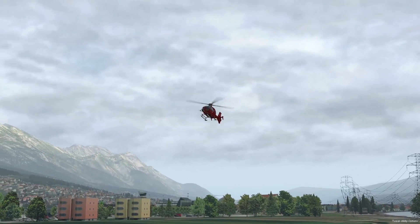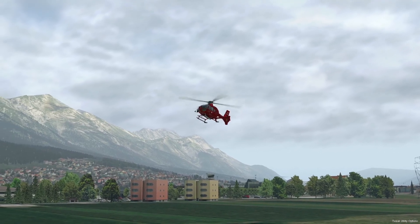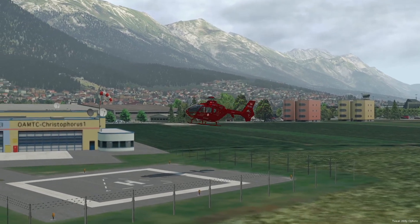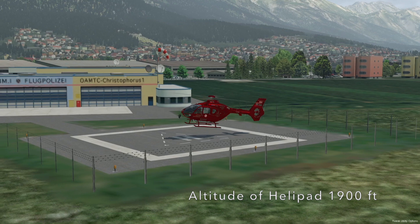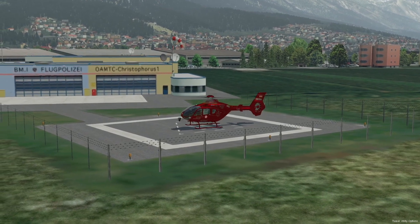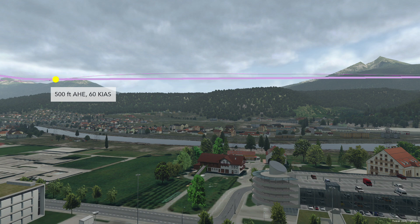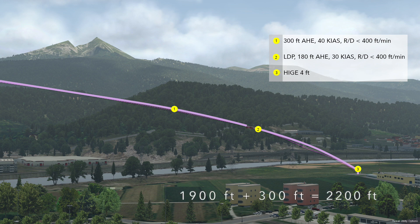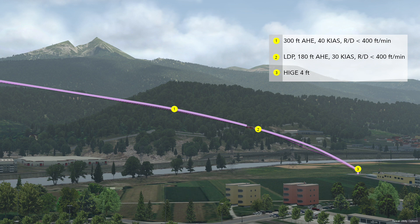Preparation is also important for a landing. We want to approach against the wind as much as possible, so we need to know the wind direction. We also need the altitude of the helipad — here it is 1900 feet again. With this we calculate important points: 500 feet above the helipad is 2400 feet, 300 feet above the helipad is 2200 feet, and the landing decision point at 180 feet above the helipad is 2080 feet. Don't forget to set the correct QNH to your altimeter.